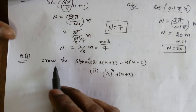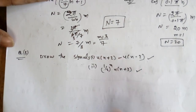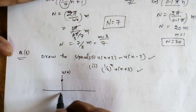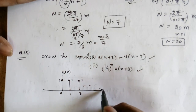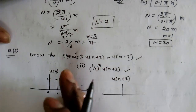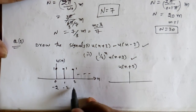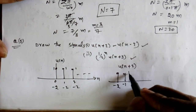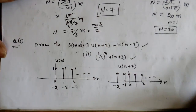Now there is a different question: draw the signals. For u[n], at n = 0, 1, 2, and so on, we have amplitude 1. For u[n+2], it is a left shift by 2, so it starts from n = -2, -1, 0, 1, 2, and so on. For u[n-2], it is delayed by 2, so it starts from n = 2, 3, 4, and so on, with amplitude 1.